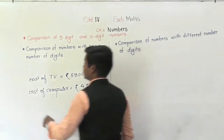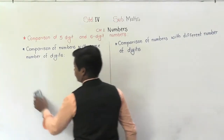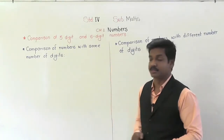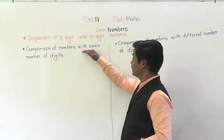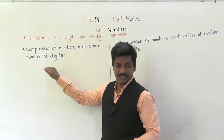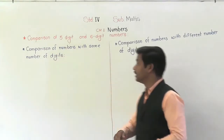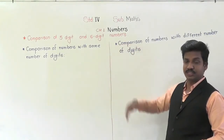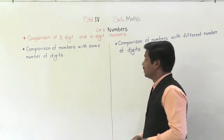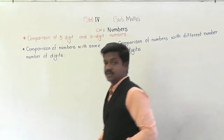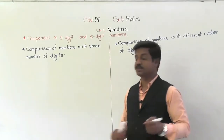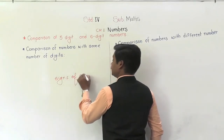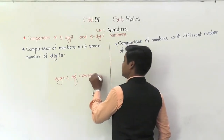So let's learn the comparison of five digit and six digit numbers. There are two situations where we need to compare numbers: comparison of numbers with the same number of digits, and comparison of numbers with a different number of digits. Before that, we are going to revise the signs of comparison.